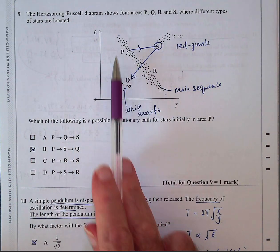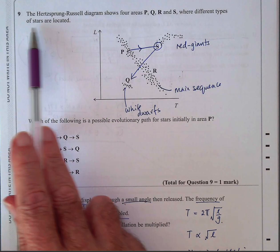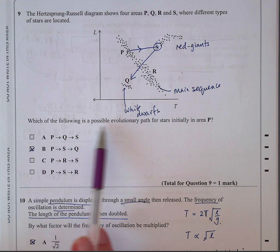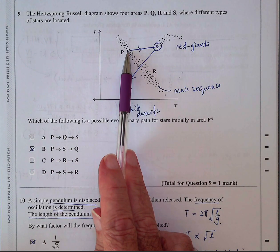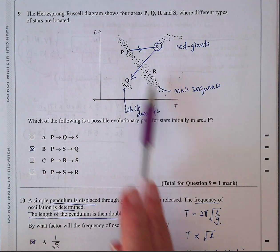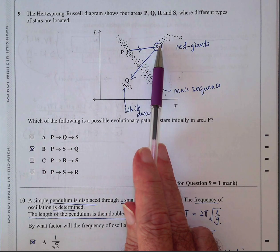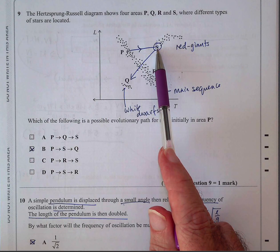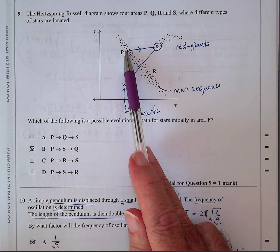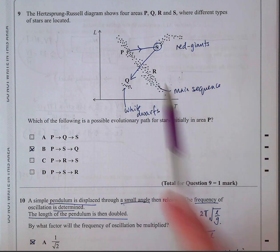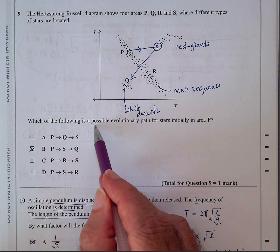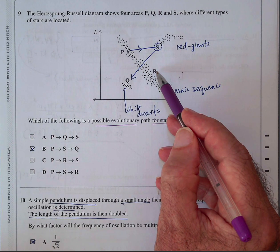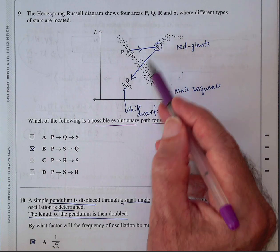Question nine is the Hertzsprung-Russell diagram. Four positions, P, Q, R, and S are shown, where different types of stars are located. This comes up in every exam, the Hertzsprung-Russell diagram, so you need to make sure you understand it. Which of the following is a possible evolutionary path for stars initially in P? Well, P are larger than the Sun, but they're on the main sequence. They then become a red giant. Depending on their size, there will be a different sized planet and therefore a different sized red giant and therefore slightly different in temperature. And then when they run out of fuel completely, they collapse into white dwarfs. So the evolution will be P, S to Q. R is not relevant because we're starting at P. Which is the following possible evolutionary paths for stars initially in area P. So R would do the same. R would become, you know, R would be more like the Sun. It'll go to become a red giant when it runs out of hydrogen and then eventually becomes a white dwarf.